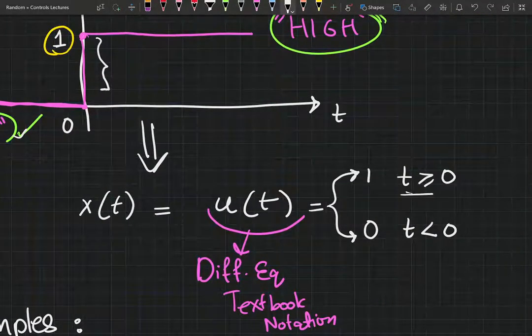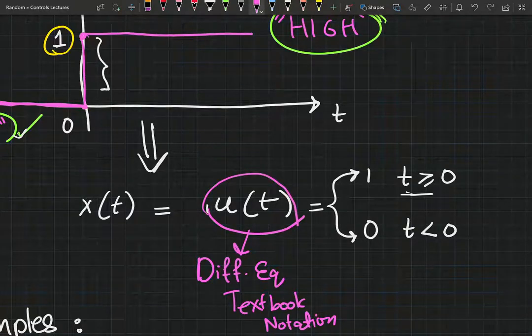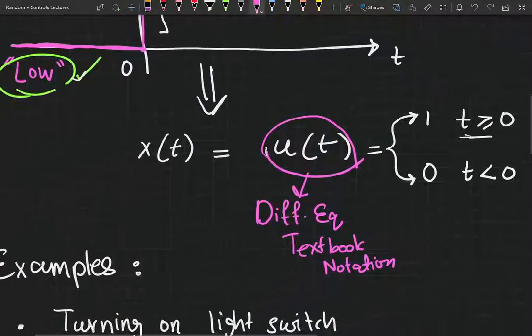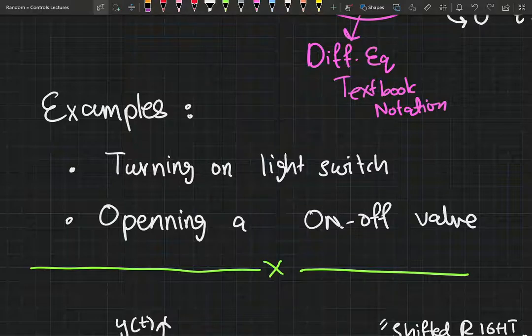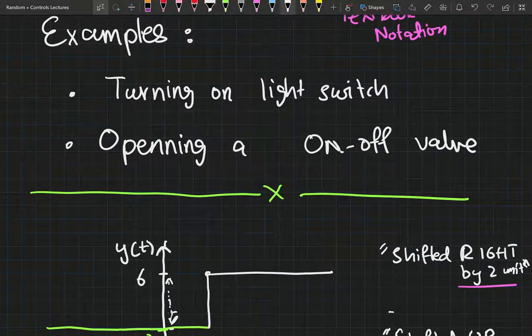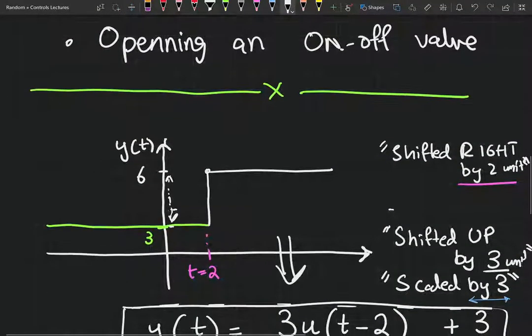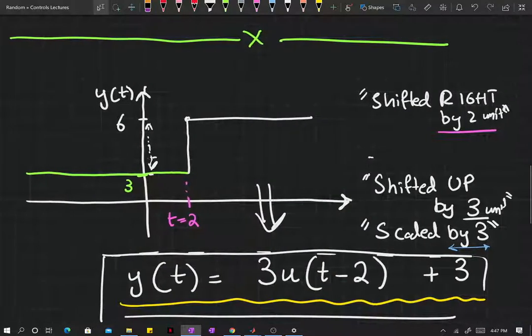And for the vanilla step function, the value is equal to one at time greater than zero or equal to zero, and it's zero when time is less than zero. But in most practical cases like turning on a switch or opening an on-off valve, something like this is more realistic.